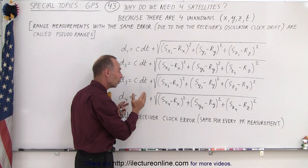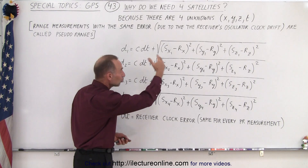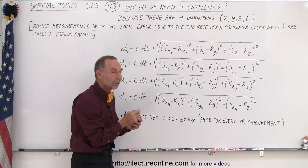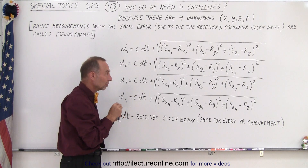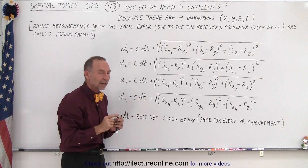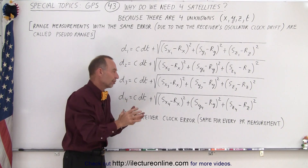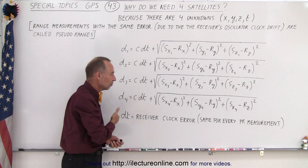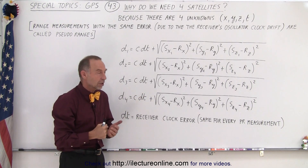Four unknowns, four equations — we are now able to come up with a solution and therefore arrive at a much more accurate measurement for the distance between the receiver and the four satellites. That's how we take the pseudo-ranges and convert them into more accurate ranges by compensating for the clock drift, for the clock error.